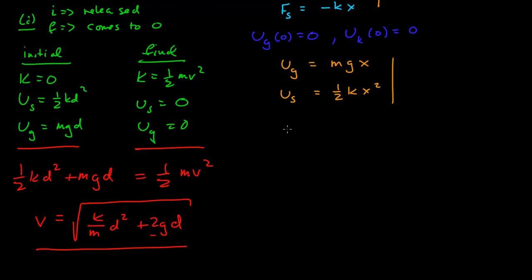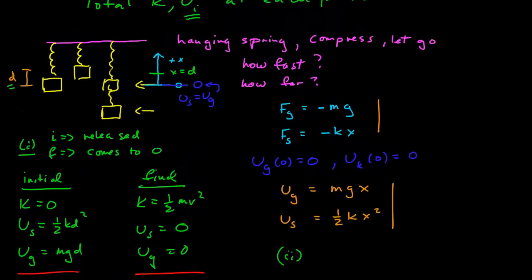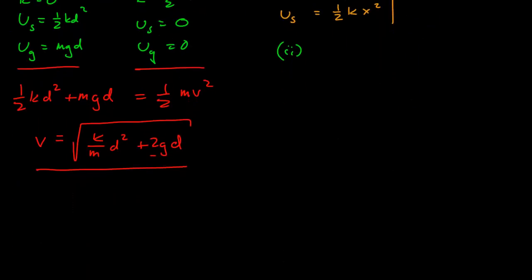For Part 2, we want to know how far it falls. It starts at x = d and falls to some final position x, which we note is less than zero — below the equilibrium point.